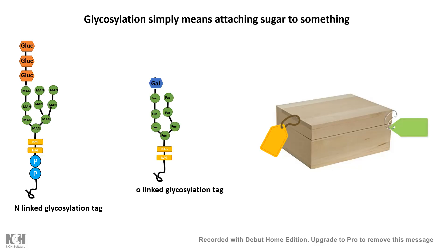This tag could be different as well. So if we signify O-linked glycosylation as this green tag, as you can see, the location is different and the constituent that the tag is made up of is also different. So these are differences between N-linked and O-linked glycosylation. Let's look at O-linked glycosylation to appreciate this process, and then we talk about its biological relevance and its function.